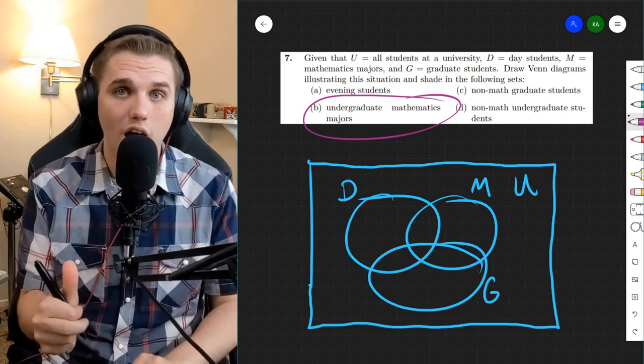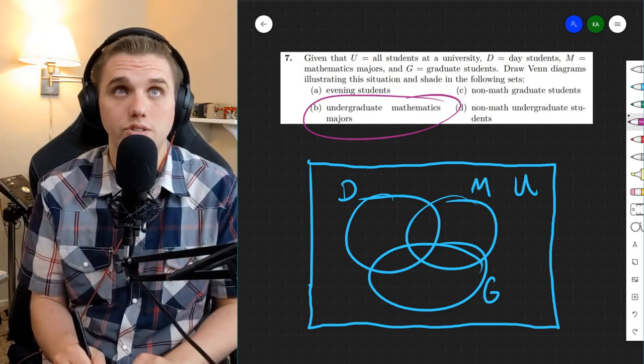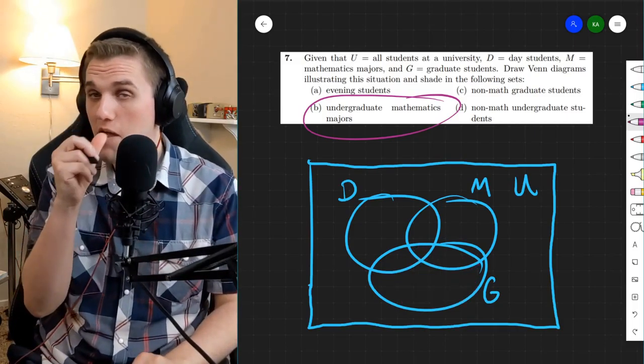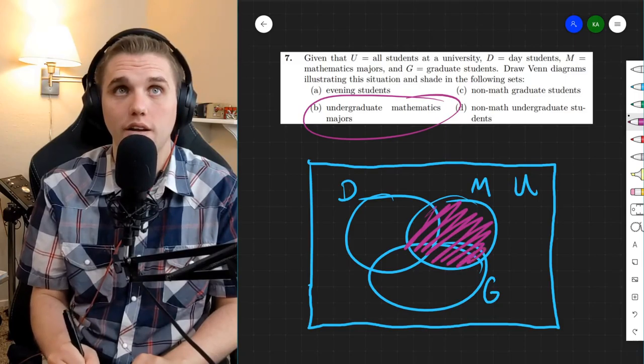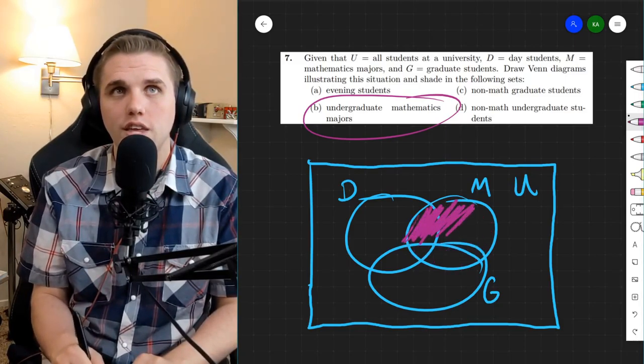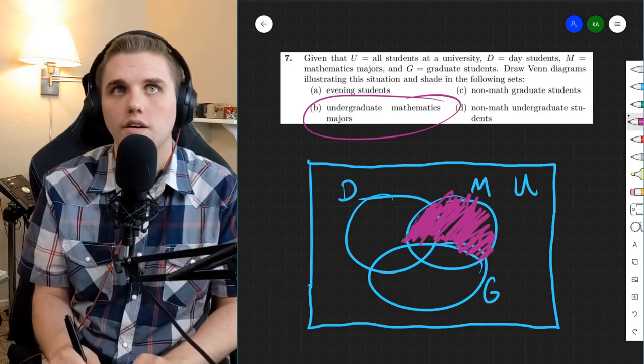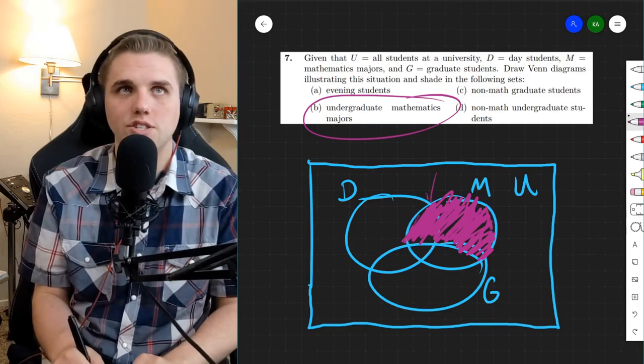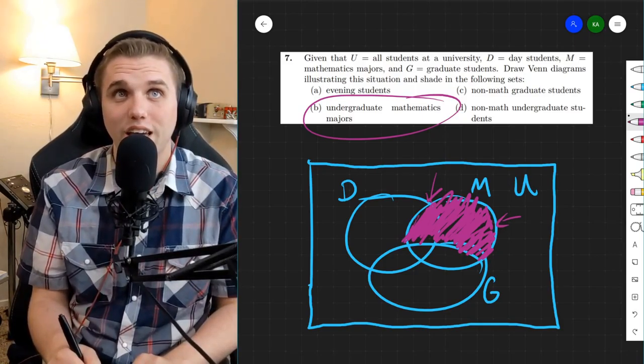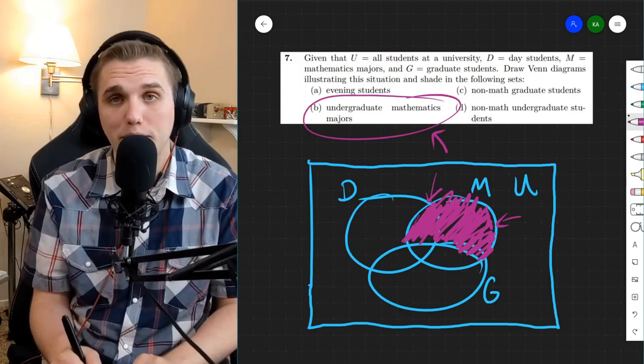So it can't be in this graduate region. We can't be in there. And it has to be in this math region right here. And so the only region I have left over is everything in M that's not in G. So we have some day students that are math students, and we have some math students who are evening students. But none of them are grad students because we're only specifically working with undergraduate math majors.